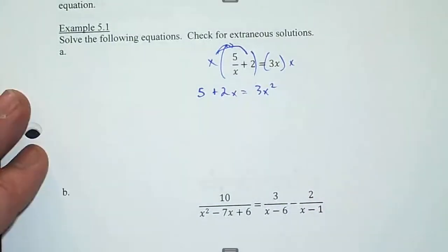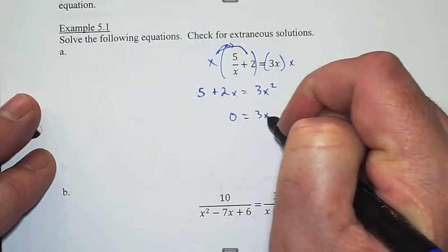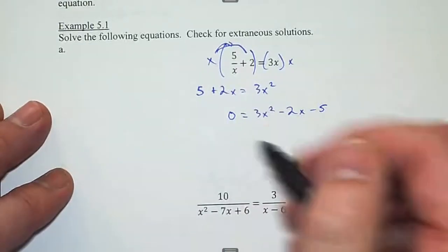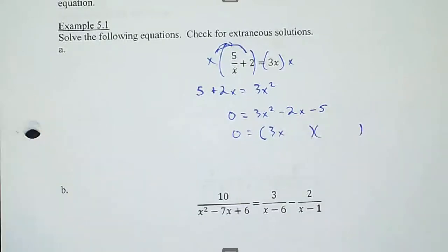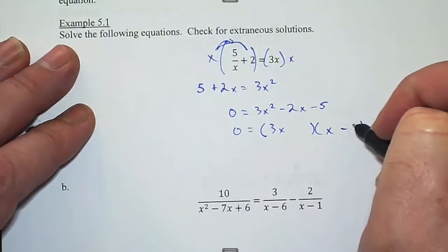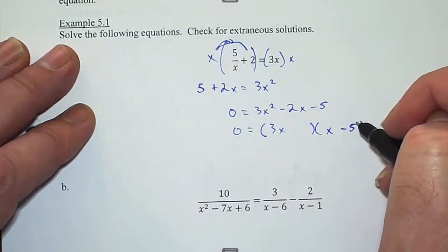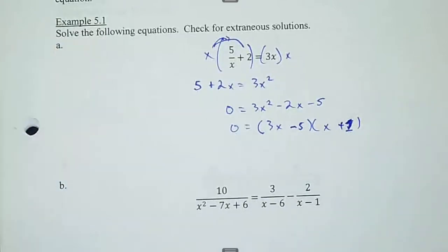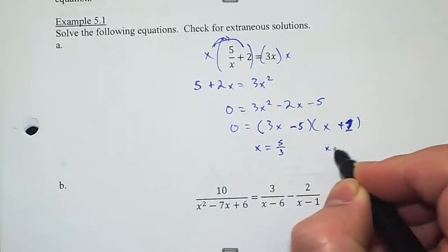x times 2 is 2x, and 3x times x is 3x squared. Now I set everything equal to zero because of the x squared. I factor — unfortunately not all of these are going to be factorable, sometimes we'll have to use the quadratic formula. So I'll put (x − 5/3)(x + 1). The solutions are x = 5/3 and x = −1.